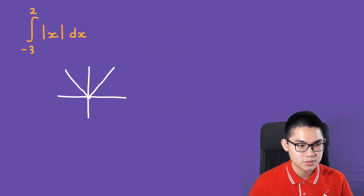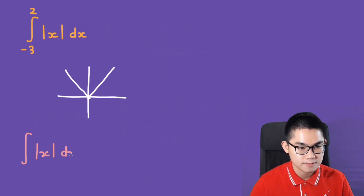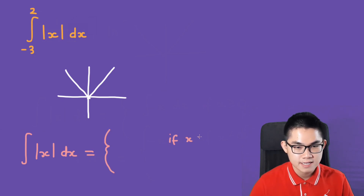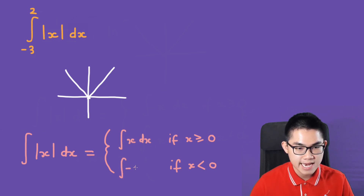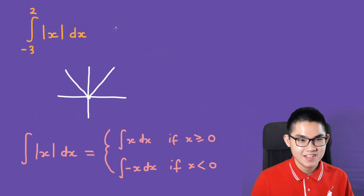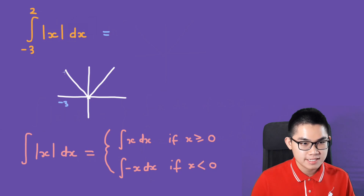So, there are two case scenarios for the integral of the absolute value of x, dx. The first case scenario is when x is greater than or equal to 0, and the other one is when x is strictly smaller than 0. So, we're going to split this integral apart from negative 3 to 0, and then from 0 to positive 2.